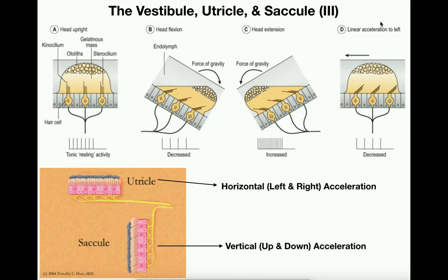Linear deceleration works the same way. If you were traveling at 60 miles per hour and someone slammed on the brakes — decelerating in the left direction — you actually move in the direction of the deceleration, toward the windshield. So if decelerating leftward, the hair cells also move left and we would have an increased rate of firing. That's why we wear seat belts.